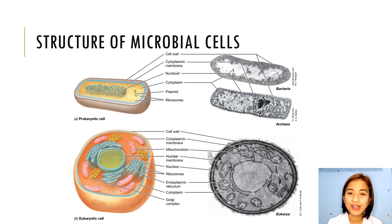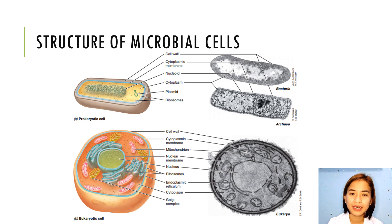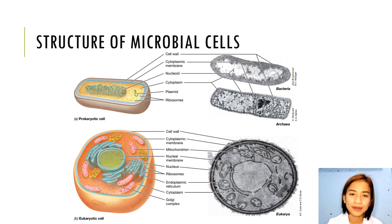All cells have much in common and contain many of the same components. All cells have a permeability barrier called the cytoplasmic membrane that separates the inside of the cell, the cytoplasm, from the outside. Ribosomes are the structures responsible for protein synthesis and are found in all cells.